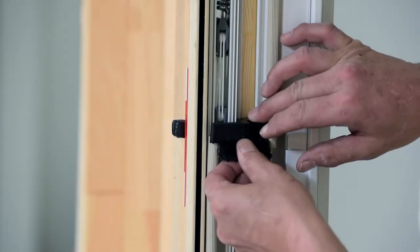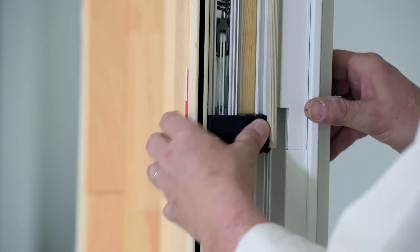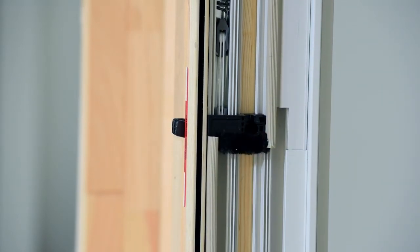Install the jam receiver assembly onto the jam, making sure that it is properly aligned with the alignment hole in the jam and pressed firmly against the jam.